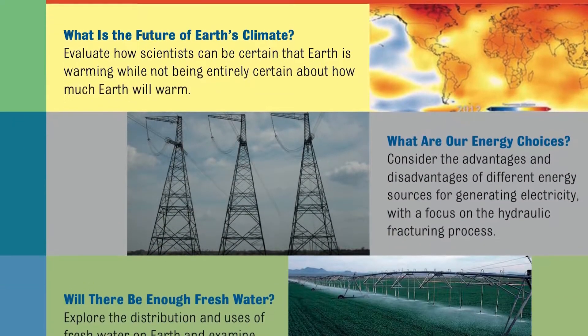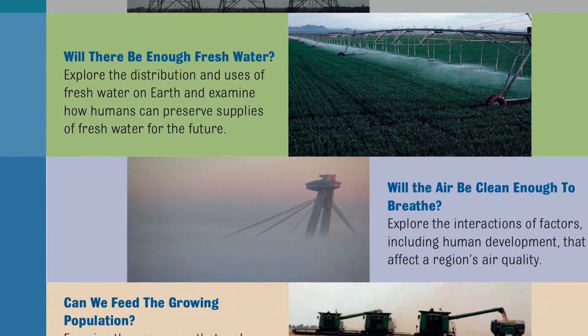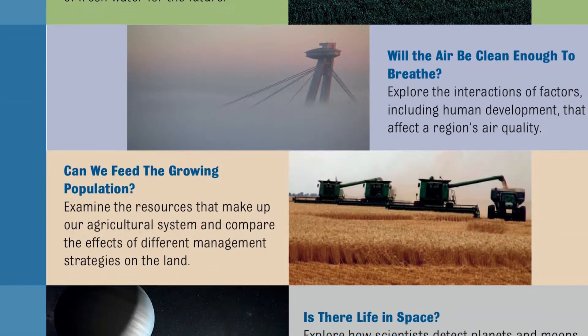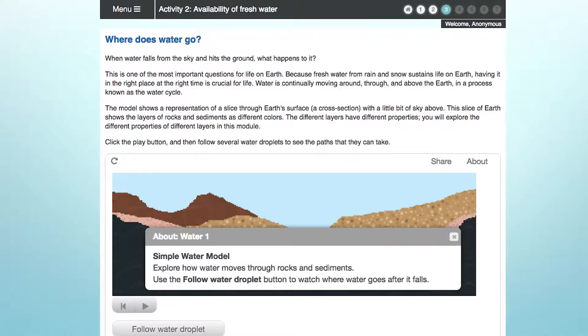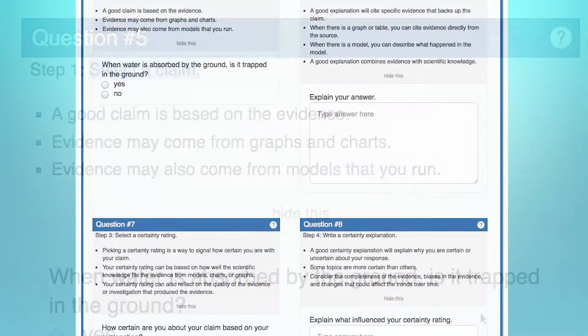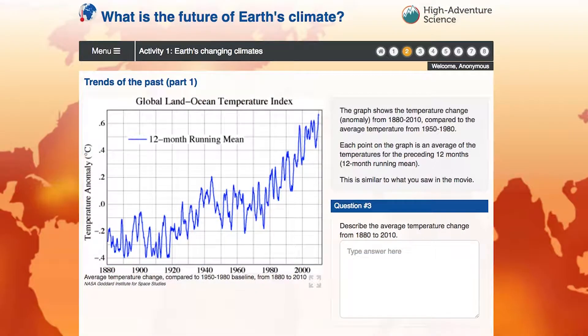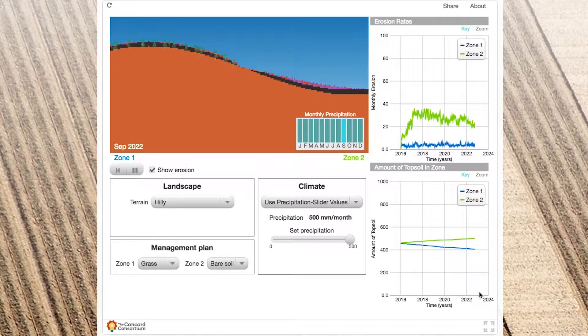We have six High Adventure Science modules, all of which are framed by important questions that are still unanswered in science. Each of the questions have students make a scientific claim and then explain their claim using evidence from either real-world data or the model. The questions are at the edge of what people know about the world around them and what is still unknown — and it's where the exciting discoveries end up happening.